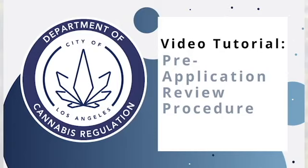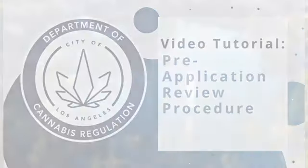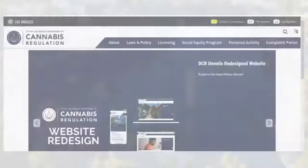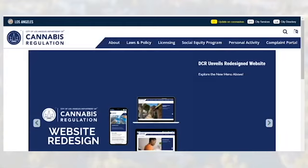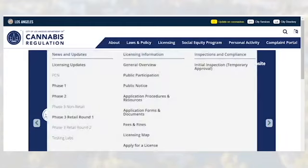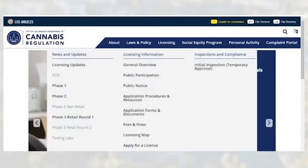To begin this process, visit our redesigned website at cannabis.lacity.org. You will notice our new menu bar at the top of our website. Click on the licensing menu and select Application Procedures and Resources.